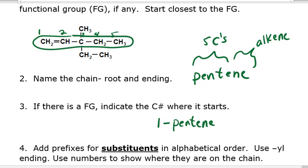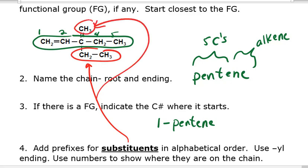Next, substituents. We're going to add prefixes for substituents in alphabetical order. Substituents are everything that's left over that we haven't circled. We have a substituent here, and another substituent over here. The substituents also get named by how many carbons there are. This is a single carbon, so that's 'meth,' and we add a '-yl' ending to the substituents, so that's a methyl group. This one below is two carbons, so that's an ethyl group. You add the '-yl' ending for substituents. Then we put the substituents in alphabetical order, which means ethyl comes before methyl.